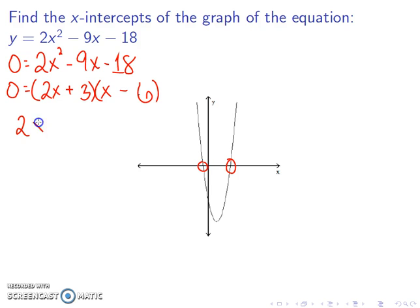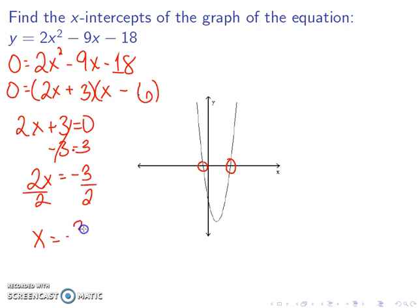So now I have 2x plus 3 equal to 0. We can subtract 3 from both sides; that gives me 2x equals negative 3. Dividing by 2 gives me x is negative 3 over 2.